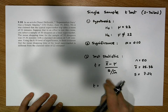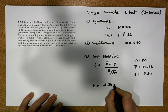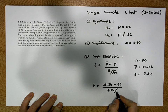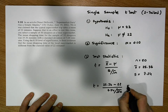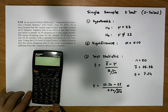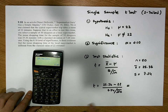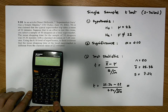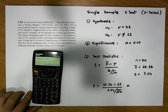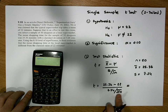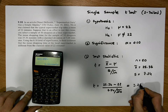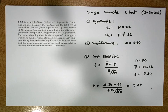Our test statistic t = (25.36 − 22) / (7.24 / √50). First, the numerator: 25.36 − 22 = 3.36. Dividing 3.36 by 7.24 gives 0.46, and when we divide by a fraction it's equivalent to inverting and multiplying, so we multiply by √50 to give us a test statistic of approximately 3.28.